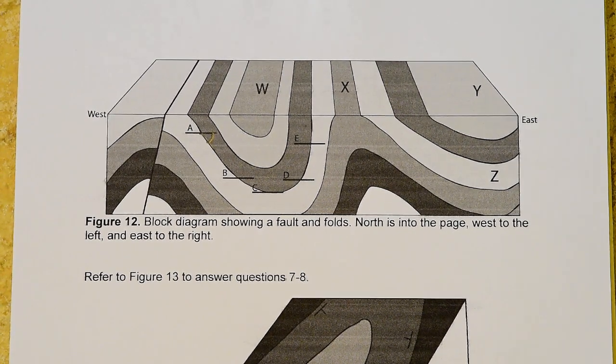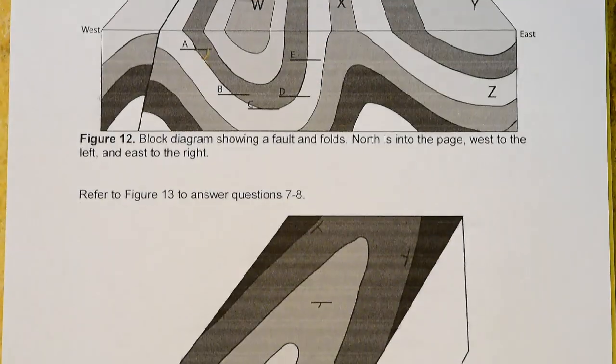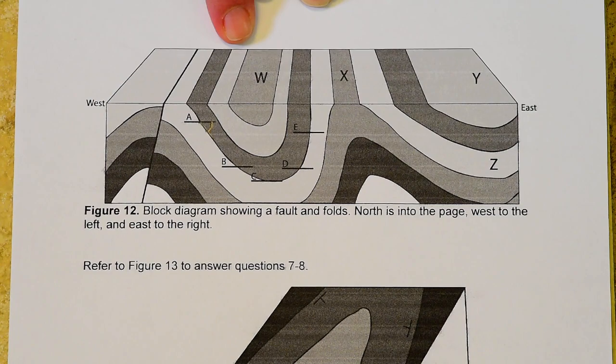Now let's look at number two. It says what type of fold is W? So we're looking at this fold right here. And it says anticline or syncline.